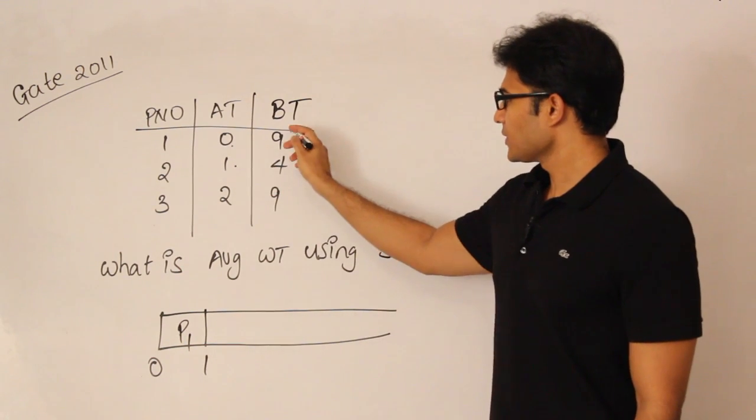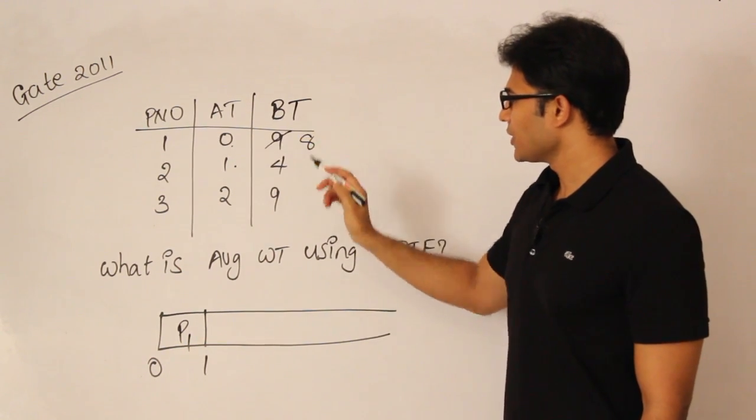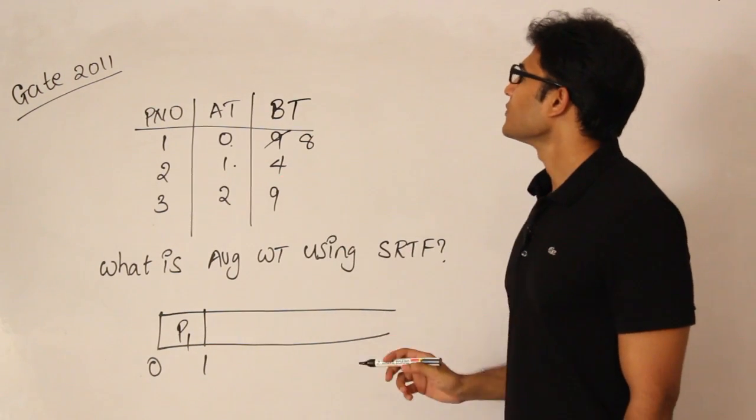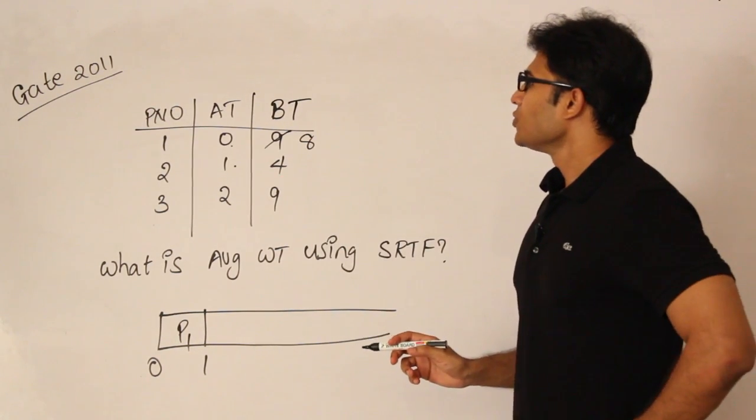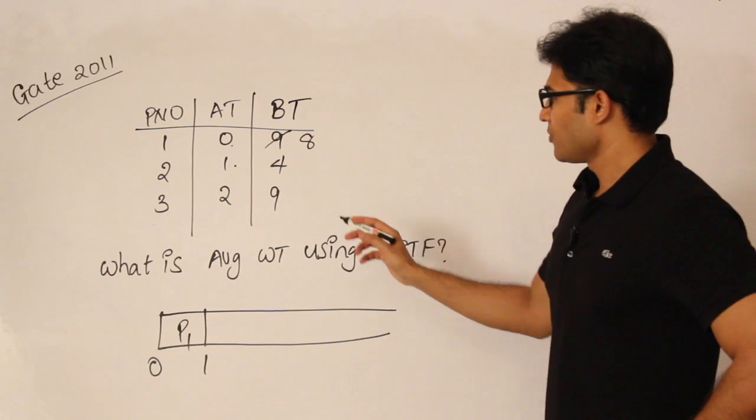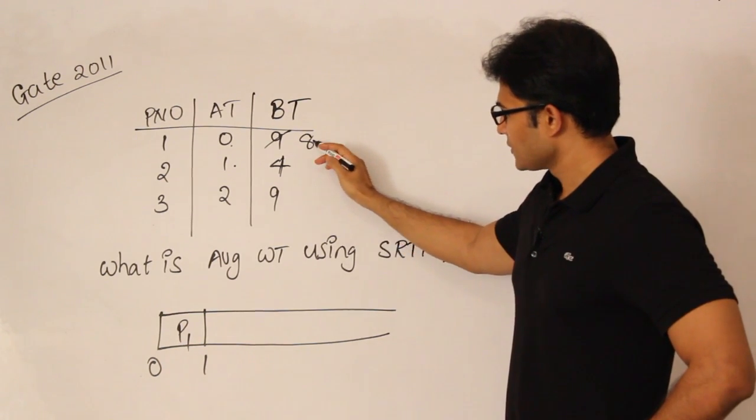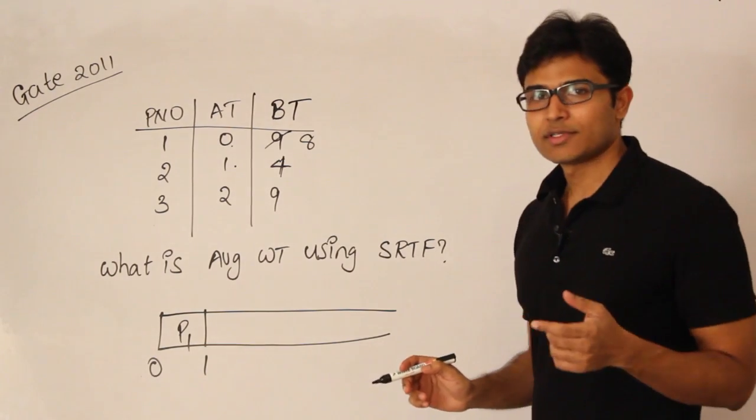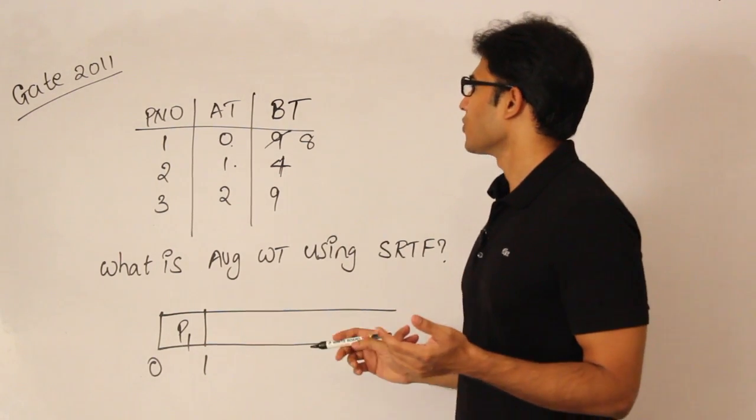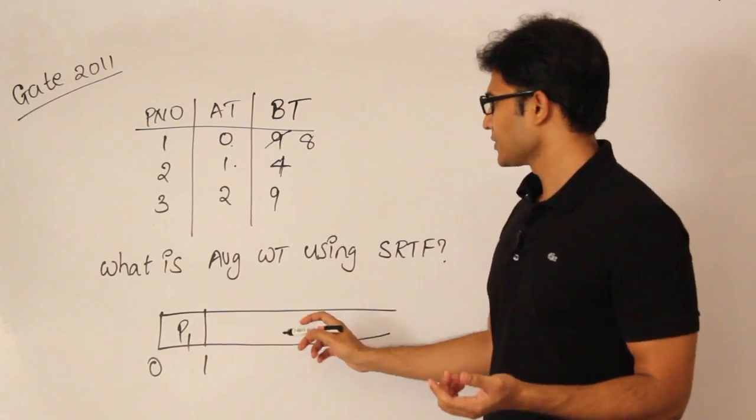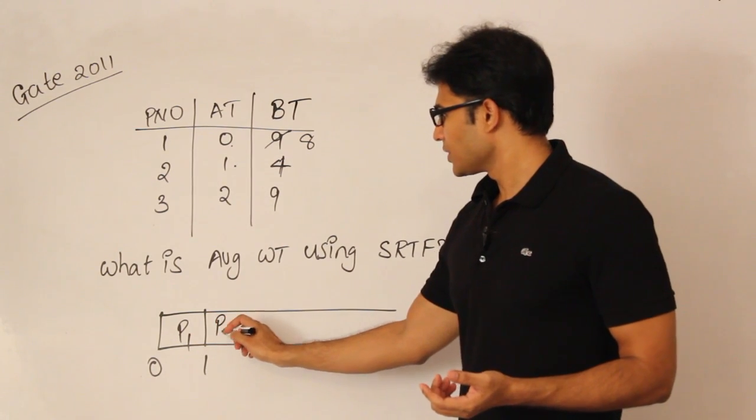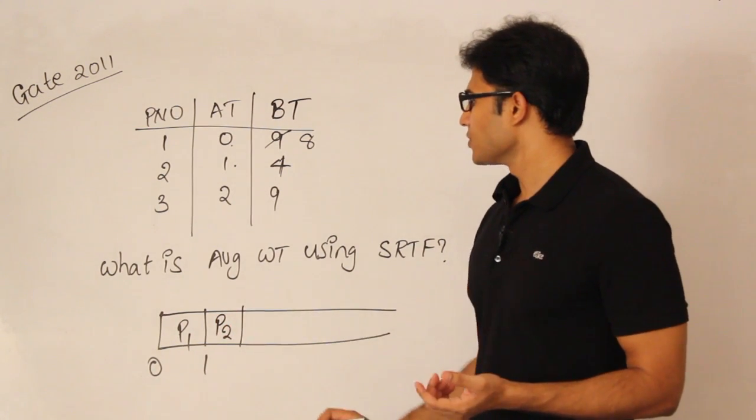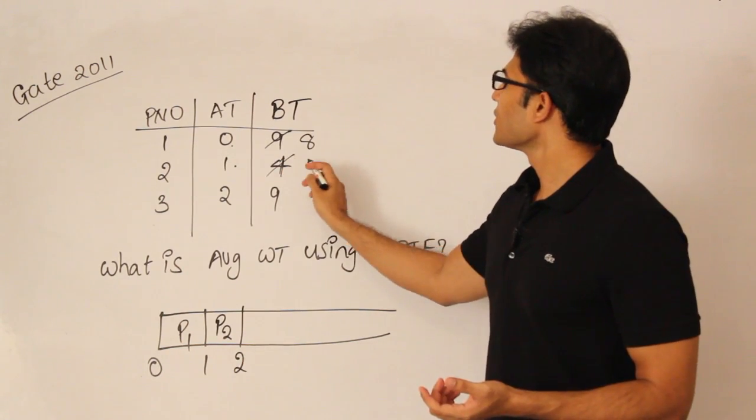By time 1, P1 has finished 1 unit, therefore 8 is remaining. P2 has arrived. Now P2 is having a time of 4 and P1 is having a time of 8. Which one is minimum? Clearly minimum is 4, so the minimum will be scheduled first. Therefore P2 will be scheduled and it will run for only 1 unit of time, so it becomes 3.